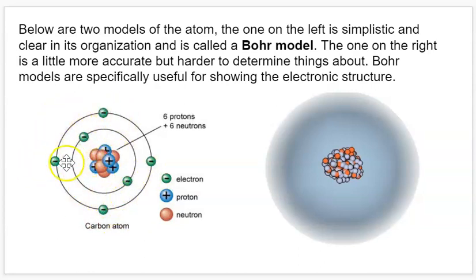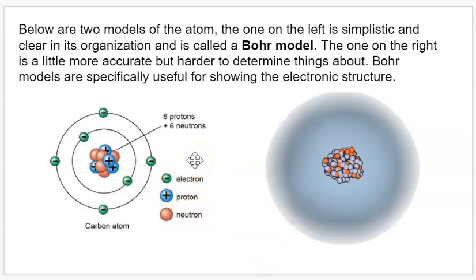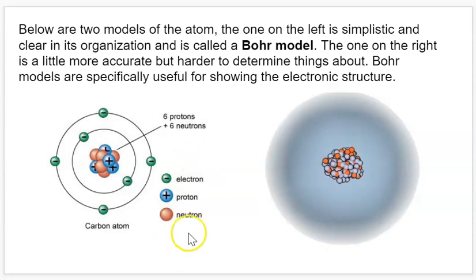You can see here that this is a carbon atom — it has two electrons in one ring and four electrons in another ring. Each of these rings represent energy levels or places the electrons can be. What things look like in reality is a little bit more fuzzy and complicated, so Bohr models are really good for explaining the electronic structure of an atom without thinking too hard about the fuzzy reality of things.